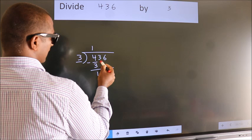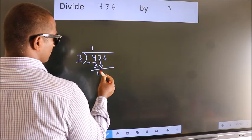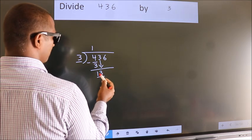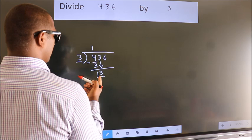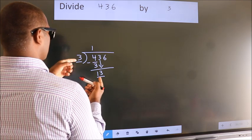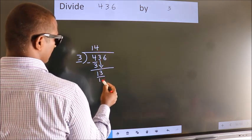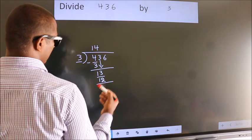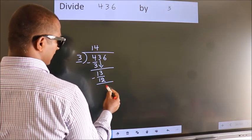After this, bring down the beside number. So, 3 down. So, 13. A number close to 13 in the 3 table is 3 times 4 equals 12. Now we subtract. We get 1.